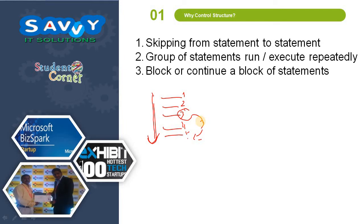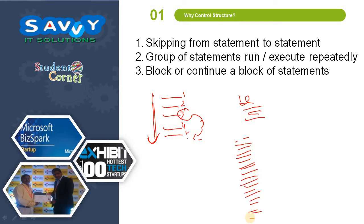The second reason is group of statements run repeatedly. For example, three statements run 10 times. In the old days, you would write the same three statements again and again. With control structures, it reduces the problem — we write only three statements and those three statements run repeatedly with the help of control structures.